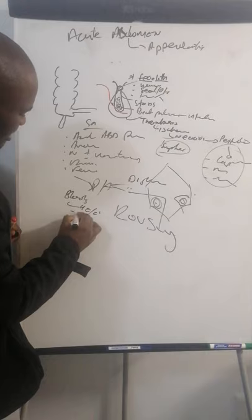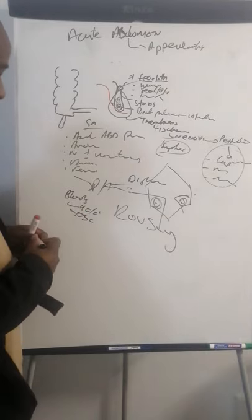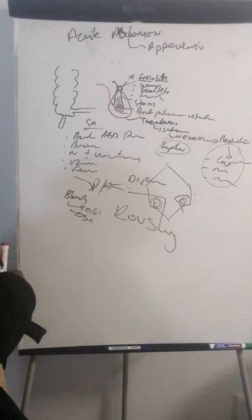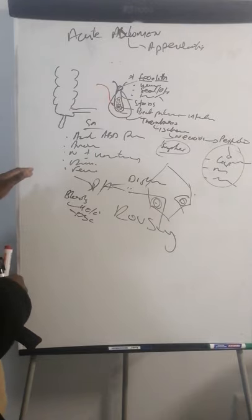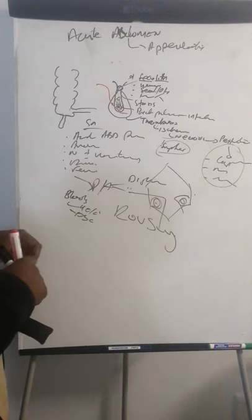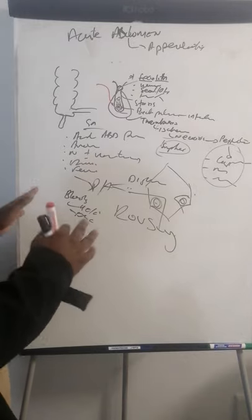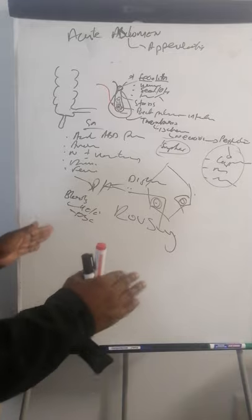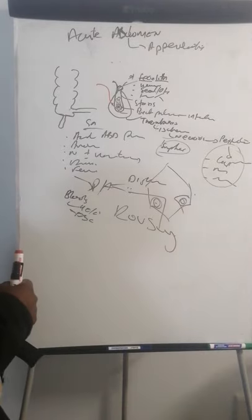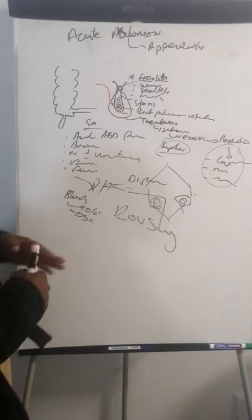The bloods you want are a U&E and an FBC. Studies have shown that if a patient has symptoms that look like appendicitis but a normal white cell count, it is not appendicitis. In my experience, patients with appendicitis always come back with a high white cell count.